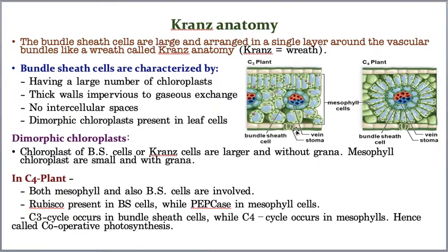Between the upper and lower epidermis lies the mesophyll tissue. In dicots, the upper side contains palisade parenchyma — cells closely packed with no intercellular spaces — making the upper side dark green. The lower side contains spongy parenchyma with intercellular spaces, making it pale green.